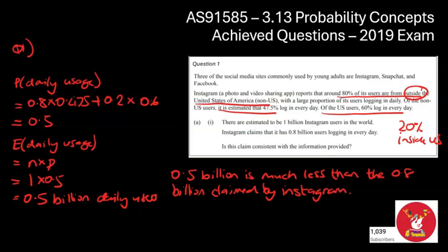This means the claim is not consistent with our calculations. There you go. We probably said a bit too much here, but better to have too much than too little. So that wraps up the one and only achieved question from the 2019 exam.